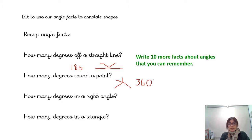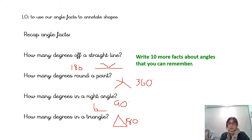Degrees in a right angle — in a right angle you should have 90 degrees, so well done if you put 90 degrees. And degrees in a triangle are going to be 180 degrees. Angles in a triangle all add up to 180 degrees, and it doesn't matter what type of triangle it is — it could be scalene, equilateral, or isosceles. This angle plus this angle plus this angle would all add up to 180 degrees.